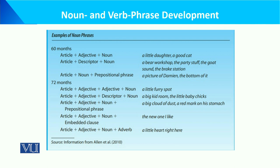At 72 months, children use article + adjective + adjective + noun — for example, 'a little furry spot.' They combine different elements to form more complex structures: 'a big kid room,' 'the little baby chicks.' Article + adjective + noun + prepositional phrase: 'a big cloud of dust,' 'a red mark on his stomach.' Also, article + adjective + noun + embedded clause: 'the new one I like' — where 'I like' is the embedded clause.